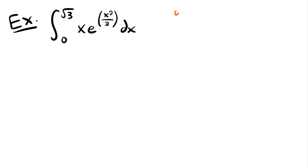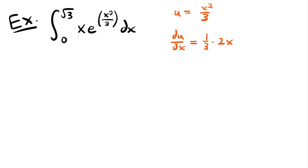Let's set u equal to x squared divided by 3 and take its derivative to see if we can find it in our integral. Using the power rule: du divided by dx equals 1 third times 2 times x to the first power, which gives us 2 thirds x. Ignoring the constant multiple, we do see x somewhere in this integral, so we have a function and its derivative — we are allowed to use u substitution. Solving for du by multiplying both sides by dx: du is equal to 2 thirds x times dx.